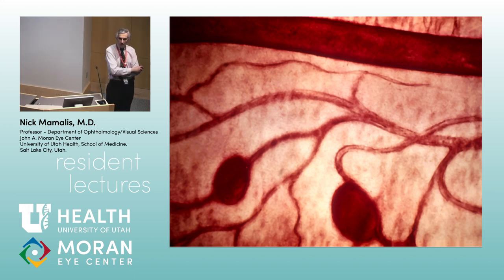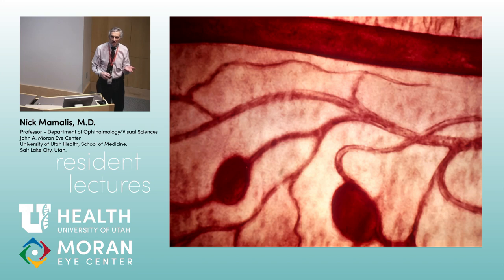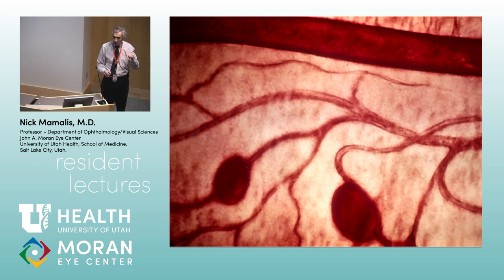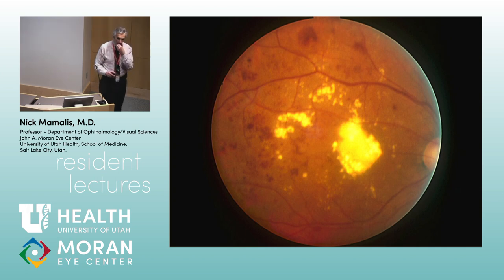Microaneurysms. A trypsin digest digests the tissue around blood vessels, giving a view of just the vessels. That's a microaneurysm — the first thing we think happens is pericytes get damaged from ischemia and diabetes, they drop out, and you get these little microaneurysms. Microaneurysms weaken the vessel wall and cause leakage, leading to dot hemorrhages, blot hemorrhages, and even flame hemorrhages.